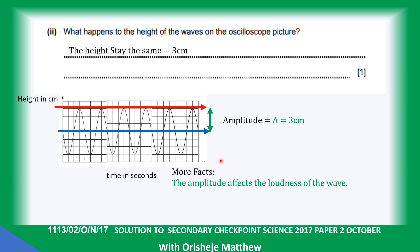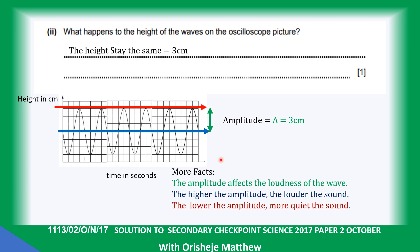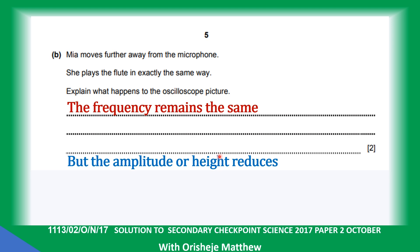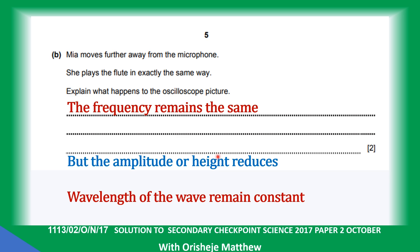The pitch of a sound is affected by the frequency. The higher the amplitude, the louder the sound; the lower the amplitude, the more quiet the sound. Mia moved further away from the microphone. She plays the flute in exactly the same way — explain what happens to the oscilloscope picture. The frequency remains the same, but the amplitude or height reduces. The wavelength of the wave remains constant.